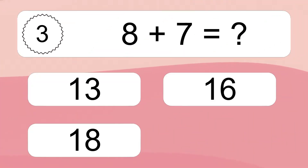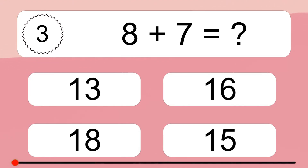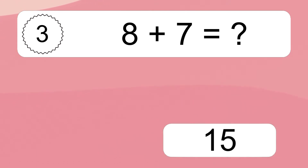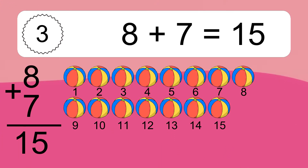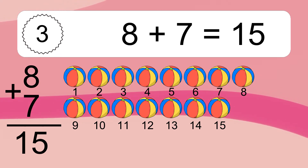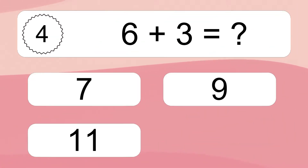Eight plus seven equals what? Eight plus seven equals fifteen. Let's count it: one, two, three, four, five, six, seven, eight, nine, ten, eleven, twelve, thirteen, fourteen, fifteen.